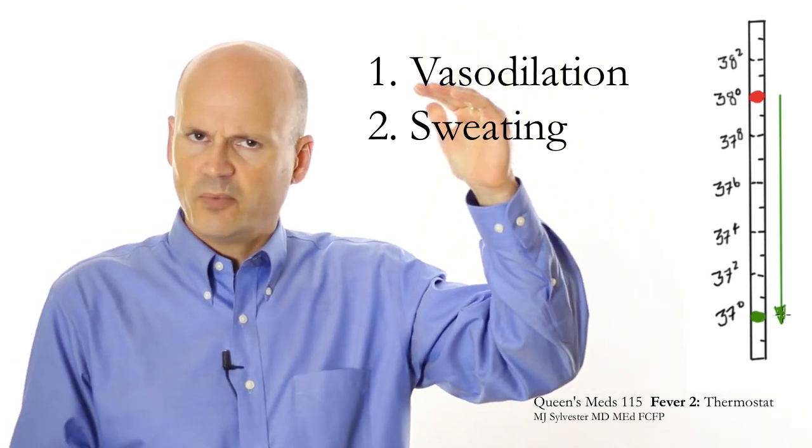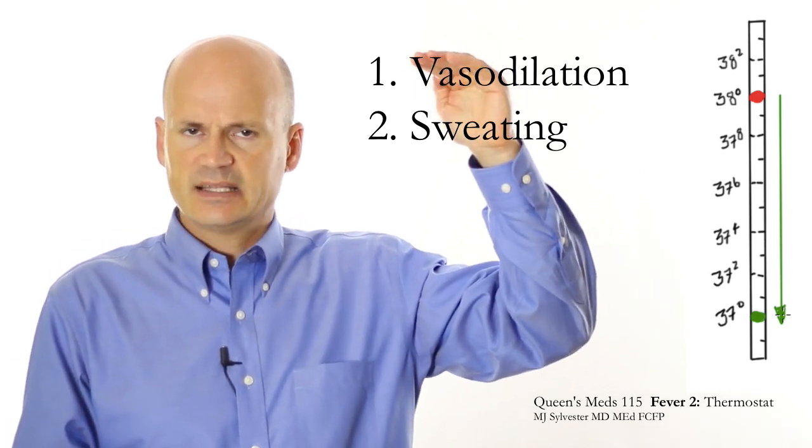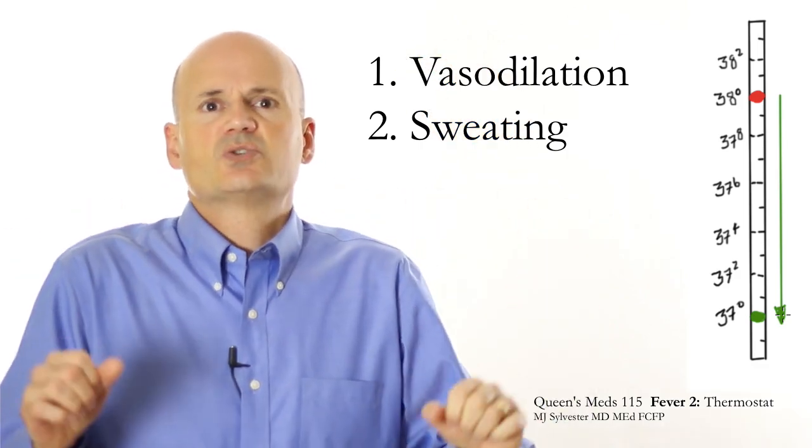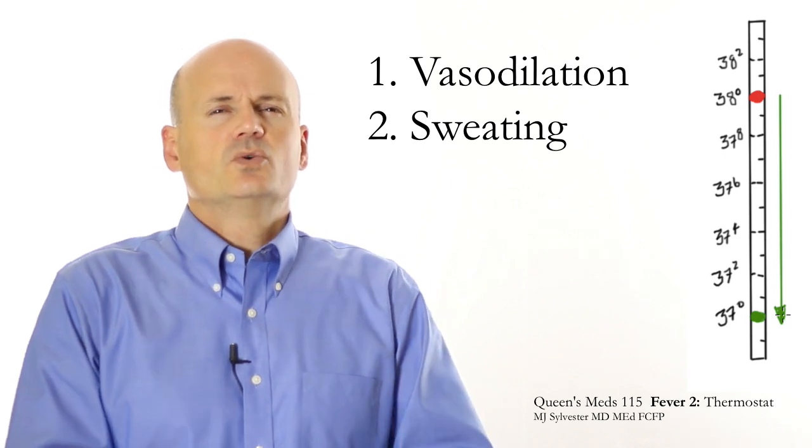So when your hypothalamus sets its set point down from 38 to 37, it vasodilates and sweats in order to cool off your body.